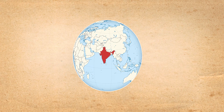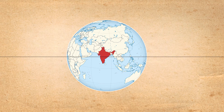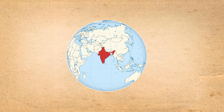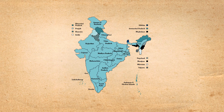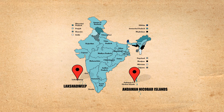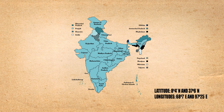India lies in the northern hemisphere. The Tropic of Cancer, 23 degrees 30 minutes north, divides the country into almost two equal parts. To the south-east and the south-west of the mainland lie the Andaman and Nicobar Islands and the Lakshadweep Islands, in the Bay of Bengal and Arabian Sea respectively.